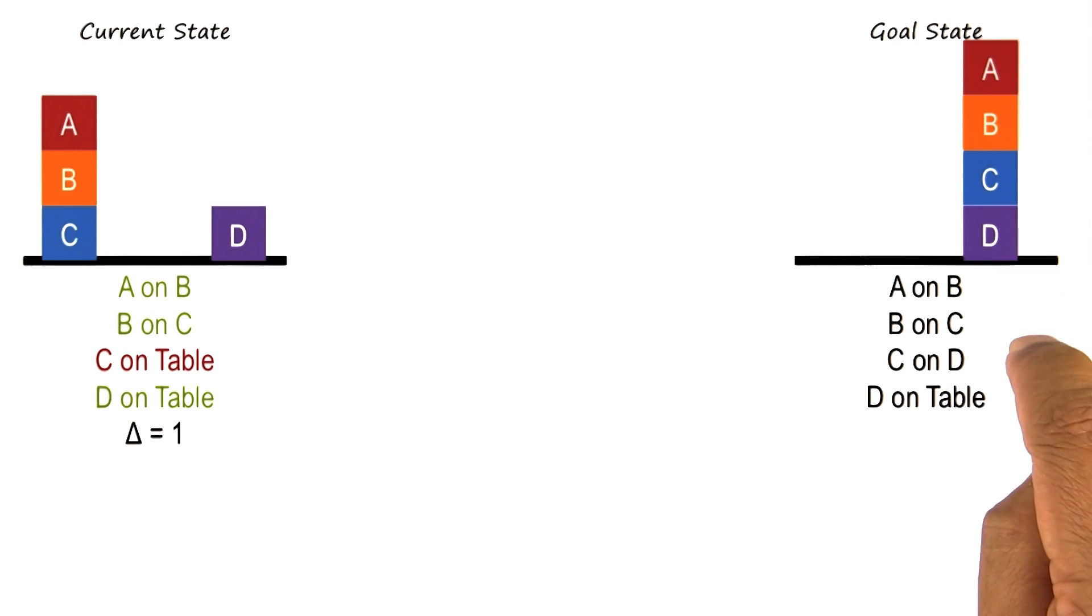So, D on top of table, C on top of D, B on top of C, A on top of B, four sub goals here. Now we can try to address this problem by looking at one sub goal at a time.